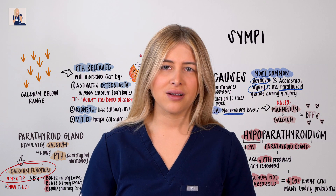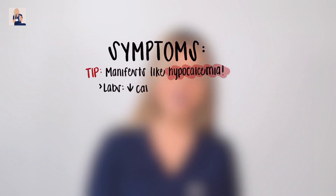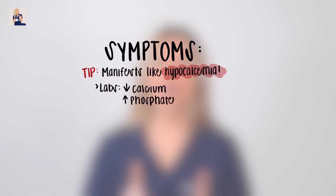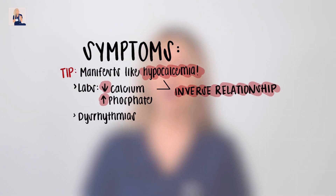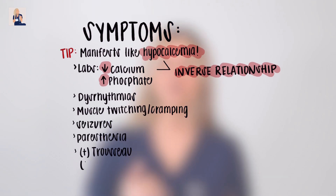Patients with hypoparathyroidism will look exactly like patients with hypocalcemia. In terms of labs, not only do we see hypocalcemia, but we also see hyperphosphatemia. Don't forget there is an inverse relationship between calcium and phosphate. Calcium plays a role in many major organs including our heart and central nervous system, so patients may present with arrhythmias, muscle twitching, cramping, seizures, paresthesia, and a positive Trousseau's or Chvostek's sign.